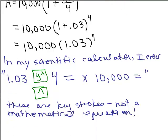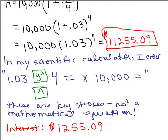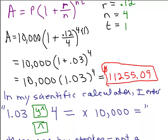When I do that and round to the nearest cent, I get $11,255.09 — that's how much money is in the bank. To find the interest, I subtract $10,000, leaving $1,255.09 in interest. And does that agree with what we got the long way? Yes — there it is: $1,255.09. So you can do it by hand the long way, or you can use the formula and your calculator to get the same result.